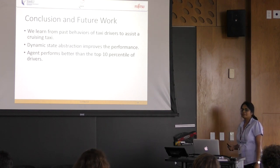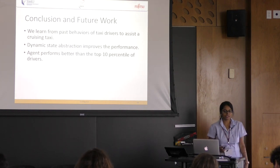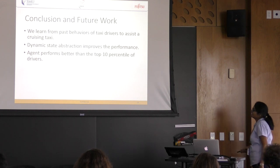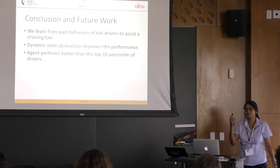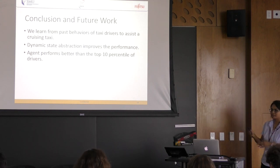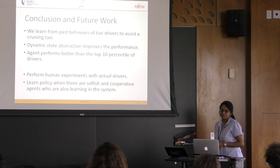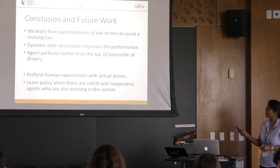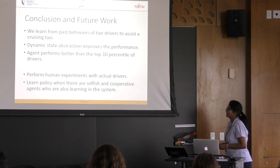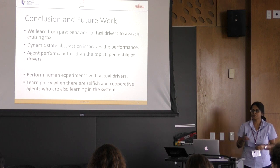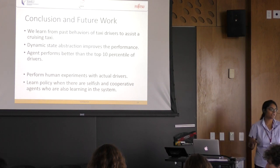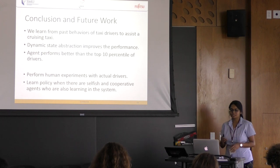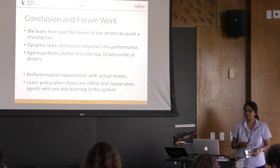To conclude, we learn from the past behavior of taxi drivers to assist a cruising taxi. Dynamic state abstraction was able to improve performance. The agent performs better than the top 10 percentile of drivers for most time periods, except for a single time period where performance was between the top 10 and 20% of drivers. For future work, we would like to perform human experiments with actual drivers, which we are conducting in August. Also, the agent currently doesn't consider the presence of other learning agents in the system, so it would be interesting to see how our method performs when other selfish or cooperative agents are also learning in the system.